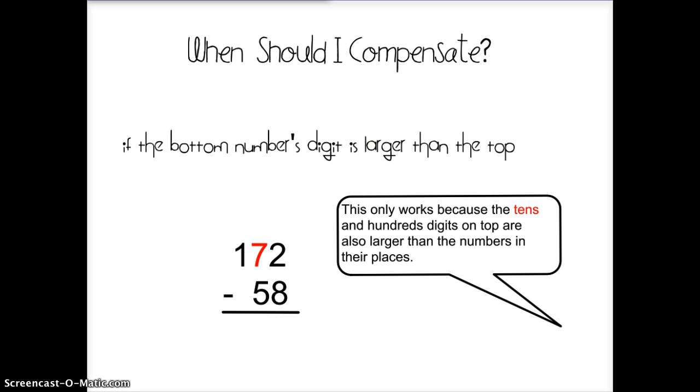This only works because the tens and hundreds digits on top are also larger than the numbers in their places. 7 is larger than 5, so I won't have to regroup in my head. And 1 is larger than 0, the placeholder.